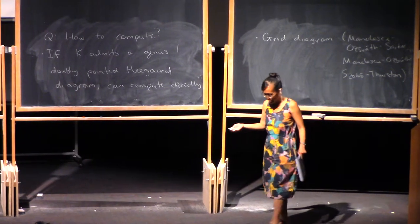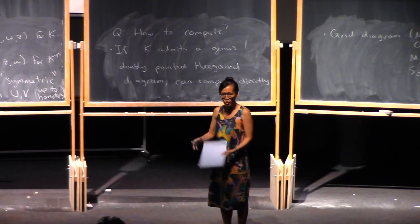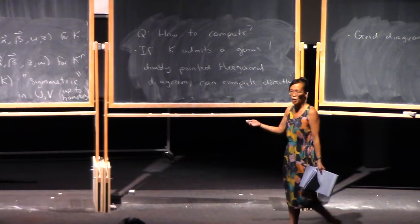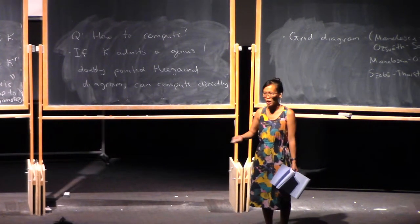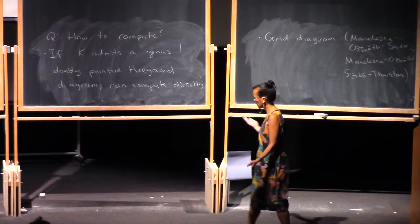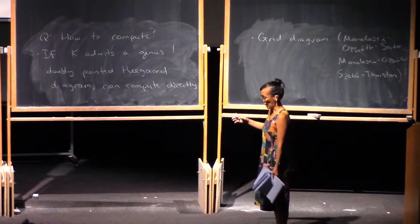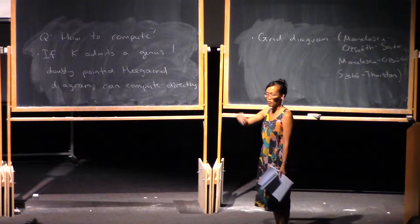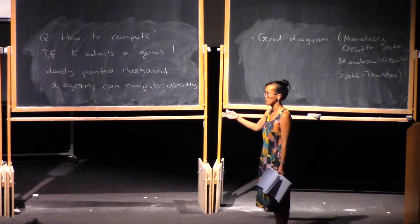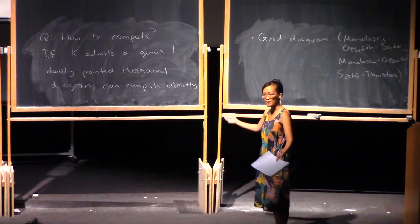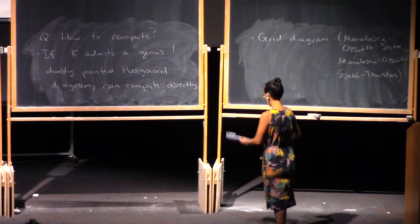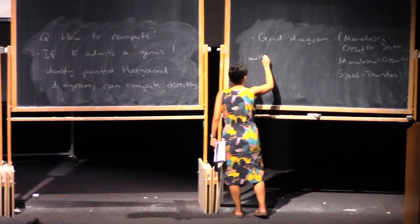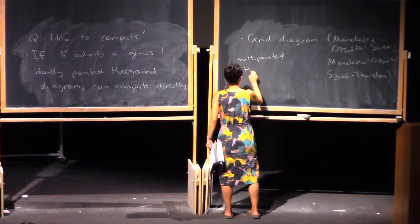So what is a grid diagram? A grid diagram is a generalization of the Heegaard diagrams described for knots on Monday. It's a multi-pointed Heegaard diagram: you have a genus 1 surface, and instead of having a single alpha circle and a single beta circle, you have lots of alpha circles, lots of beta circles, and then lots of extra base points, and you deal with everything in an appropriate way.